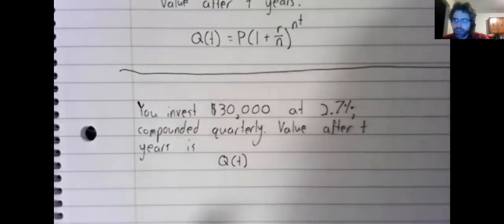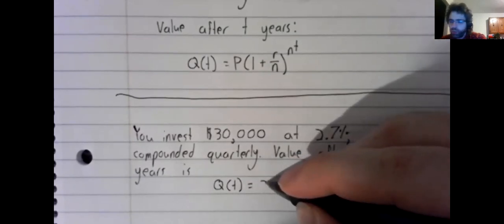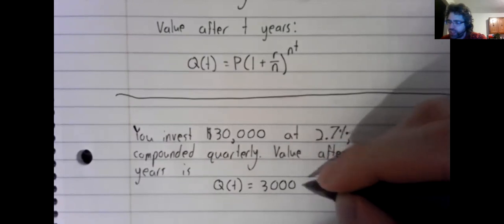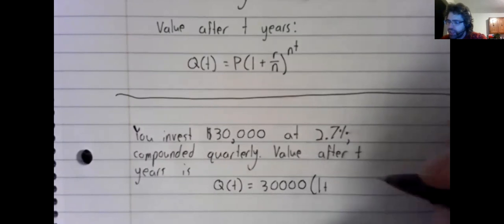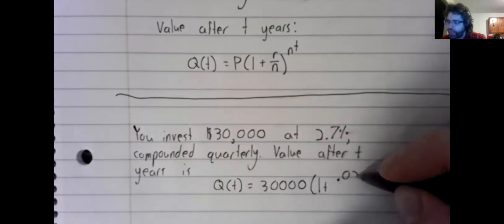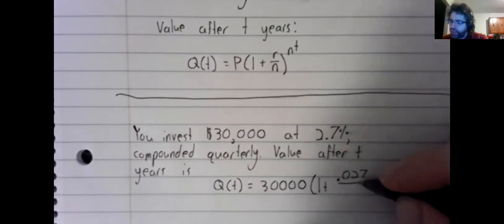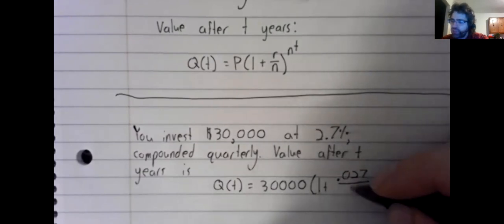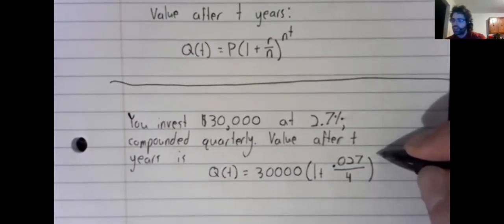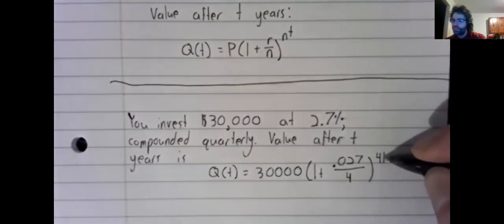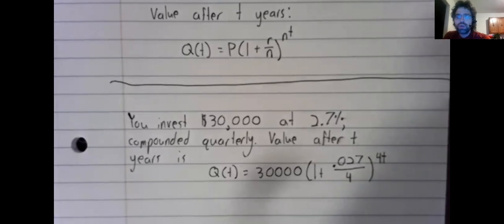And now we're plugging and playing. The principal is $30,000. The interest rate must be expressed as a decimal. Quarterly means four. It's being compounded four times per year. And here's our exponential equation.